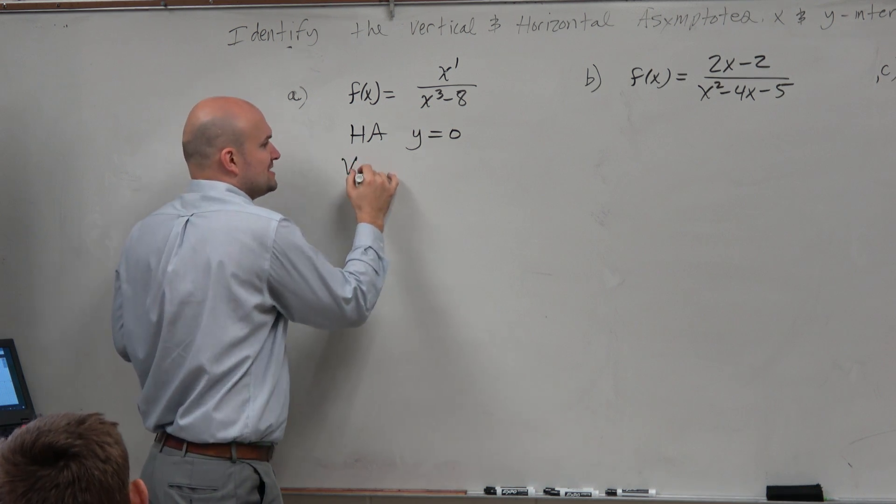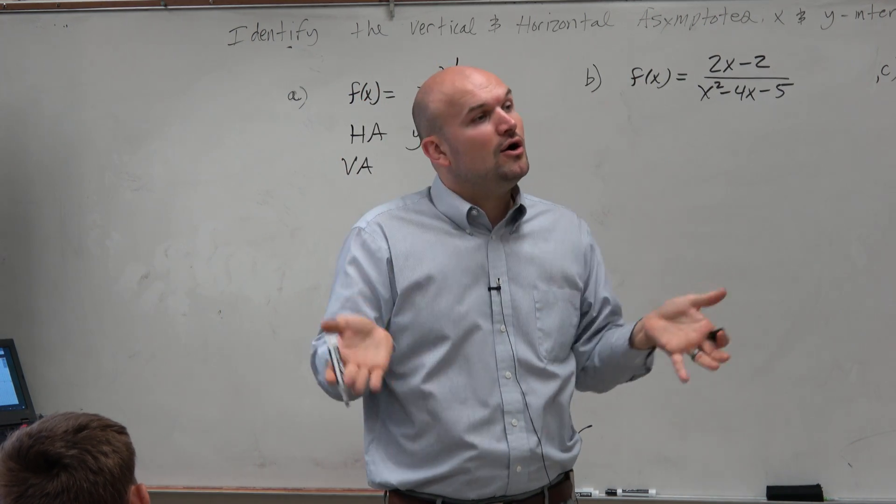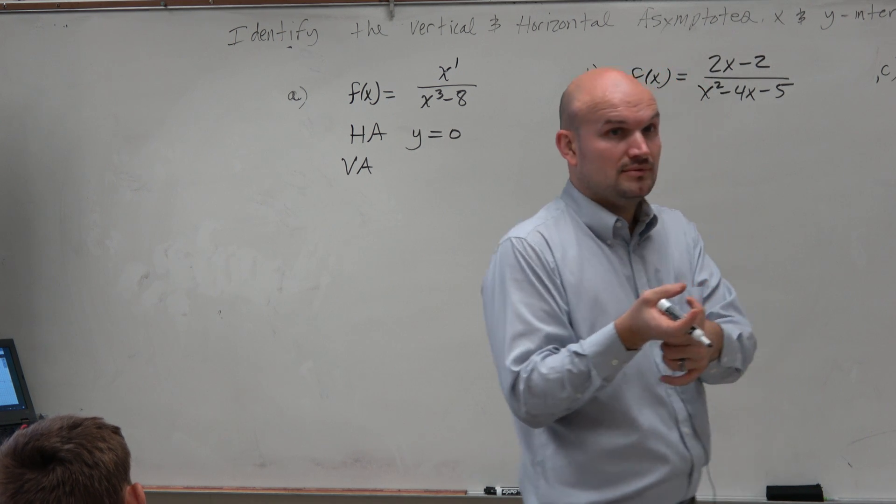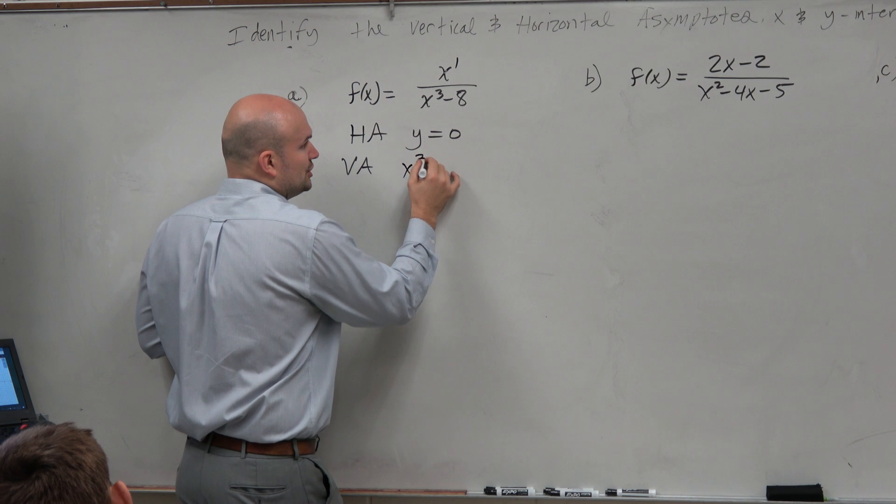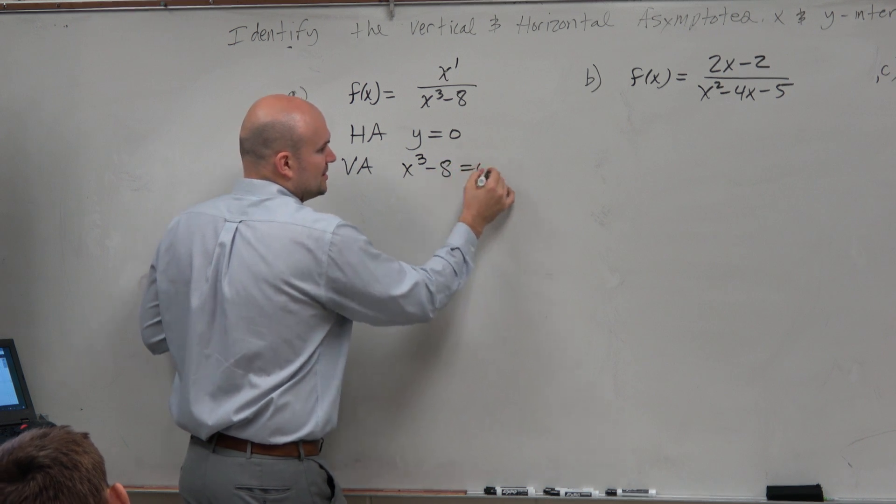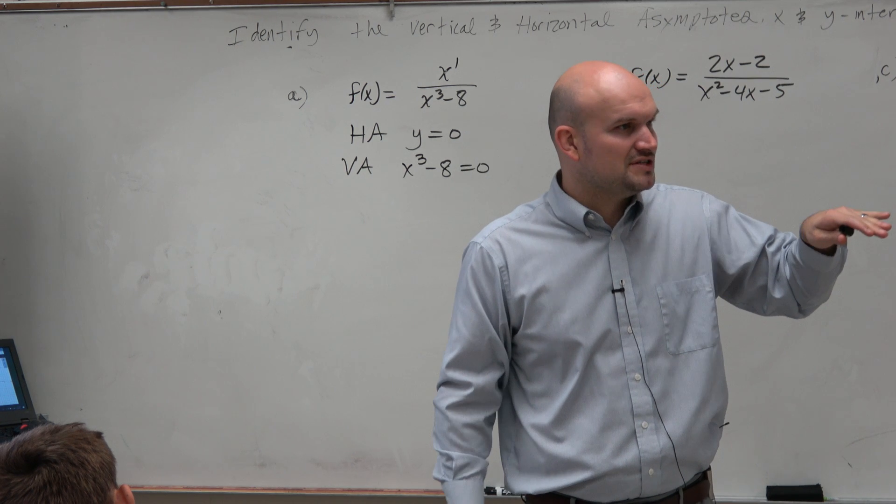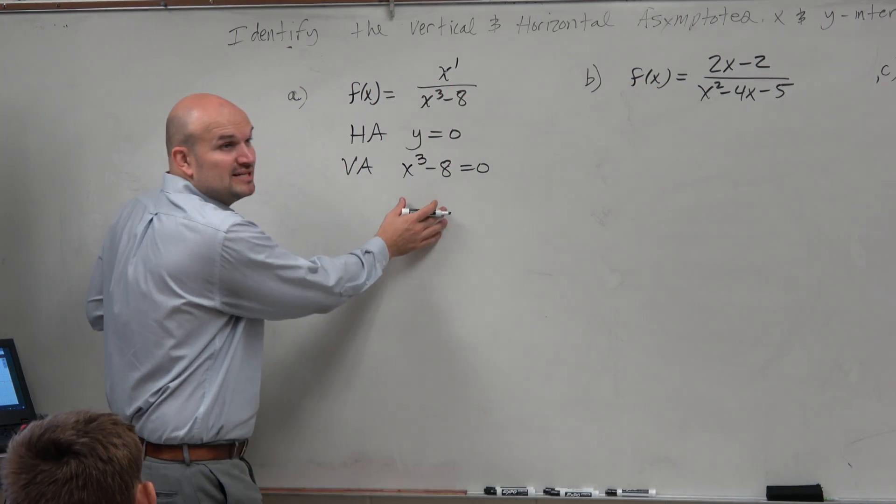Now, my vertical asymptote, I have to go back to chapter 1 and say when did the vertical asymptotes occur? Oh yeah, vertical asymptotes occurred when the denominator was equal to 0. So I'll have x cubed minus 8 equals 0. Now, this brings up an interesting point because we've talked about the sum and difference of 2 cubes. And this actually is a sum and difference of 2 cubes.